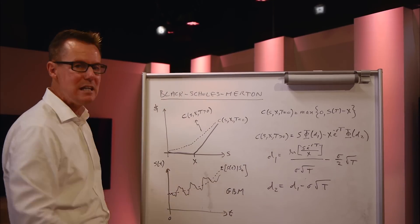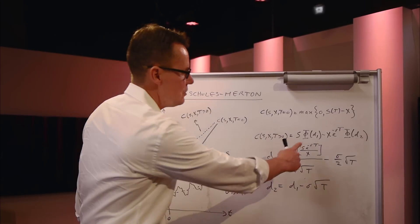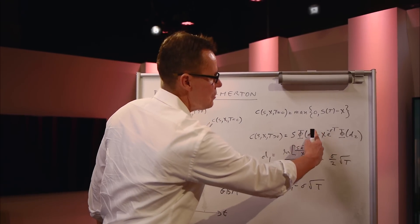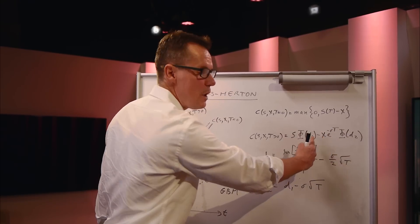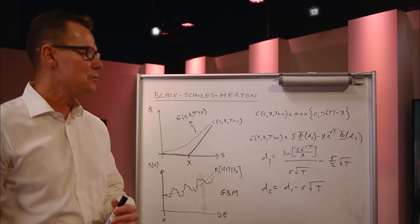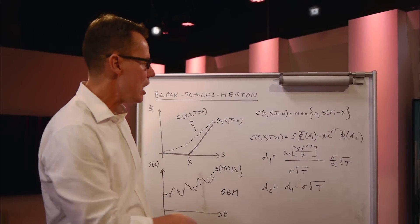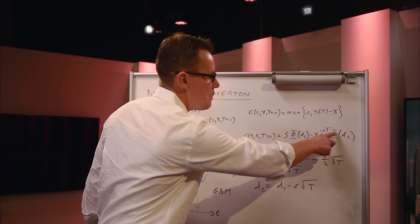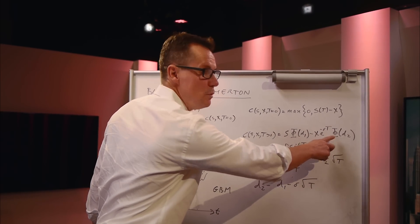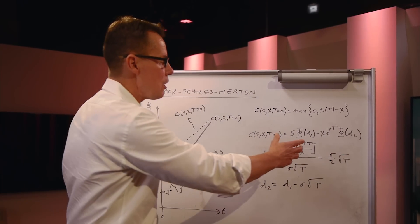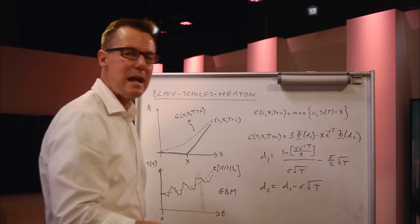This is this X, the option exercise, which is in the second term. And the second term is just the present value of the strike, which is what the option holder would have to pay in order to obtain the stock, multiplied by this term, which is really just a probability that the stock will in fact wind up above the exercise price.